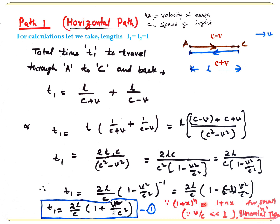The binomial theorem states (1+x)ⁿ ≈ 1 + nx for small x. Here V/C is very small, so V²/C² is much less than 1. With n = −1 and x = −V²/C², we get T1 = (2L/C)(1 + V²/C²). This is the time for horizontal travel.